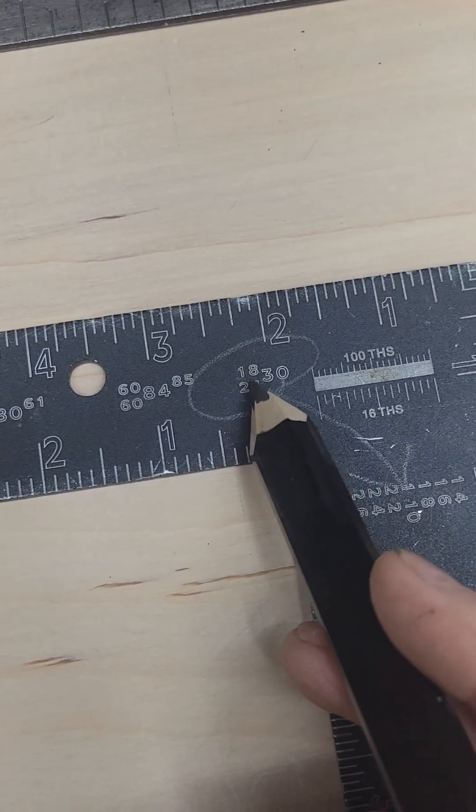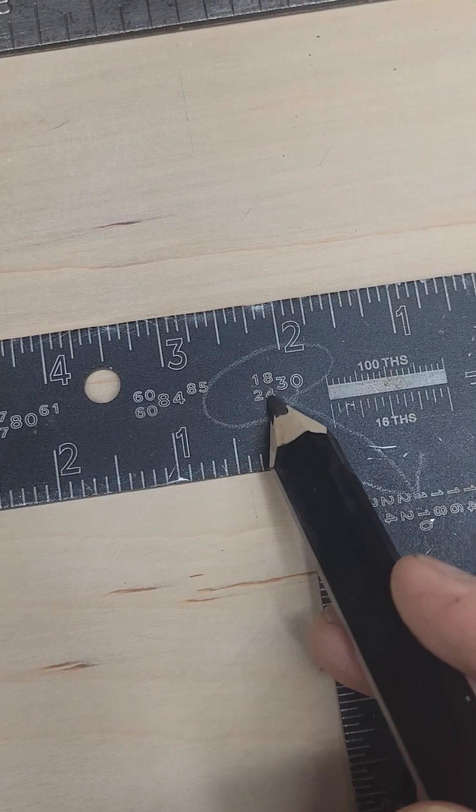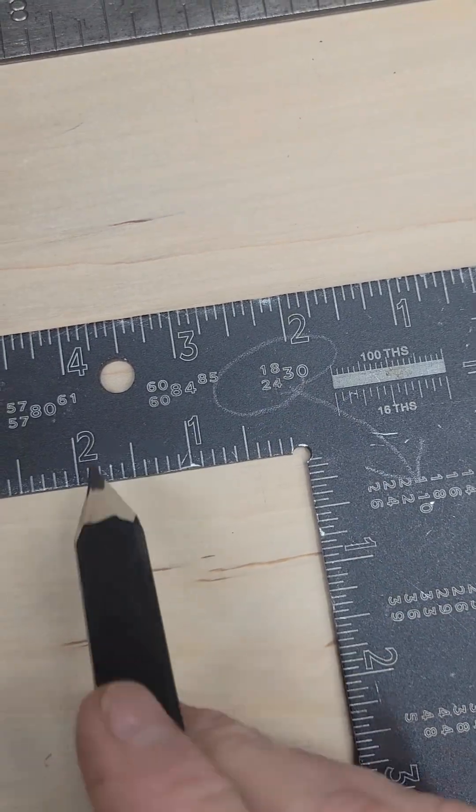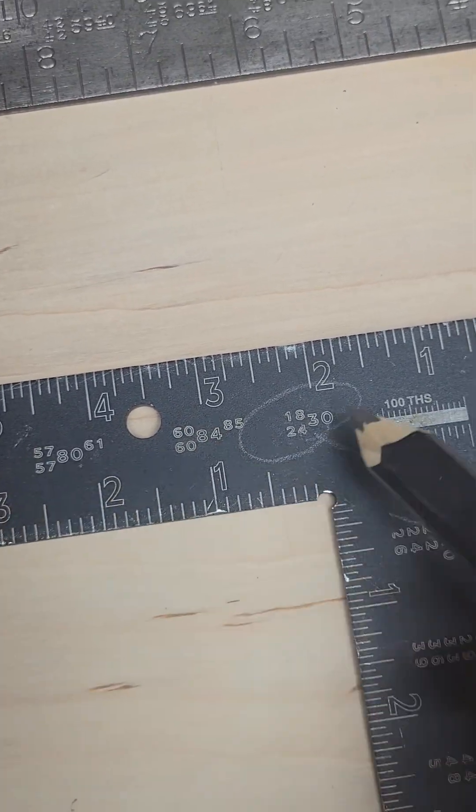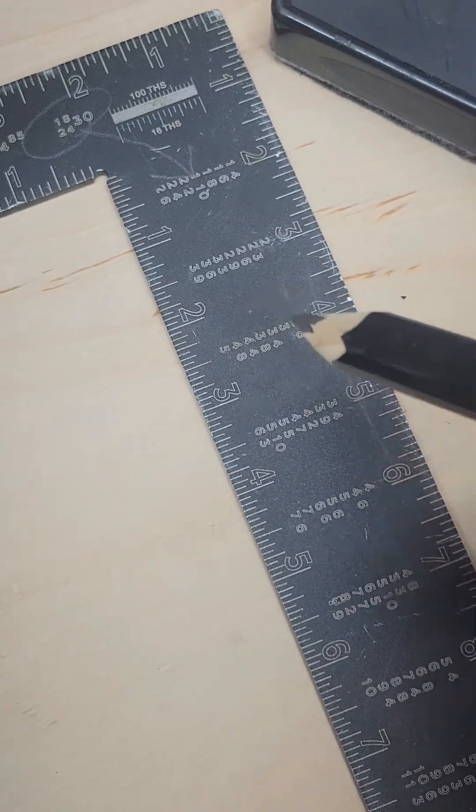Now you get to this one right here, you've got 18, 24, 30. That's nothing like this right here. It ties it back into the Essex board measure scale.